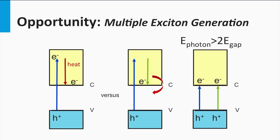The requirement is that the energy in the initial photon is at least two times that of the bandgap energy. In this way, theoretical EQEs of 200% can be achieved. If a photon has an energy larger than three times the bandgap, a theoretical EQE of 300% could be achieved.